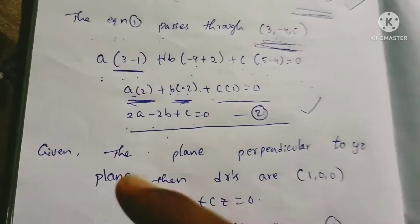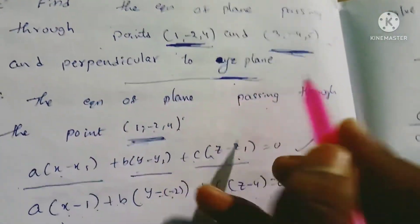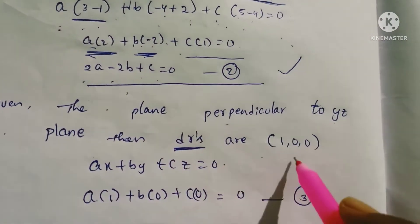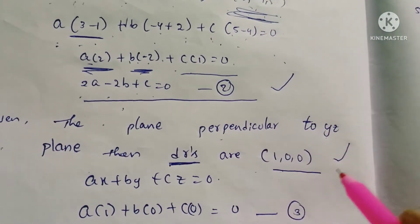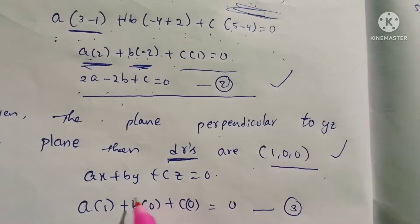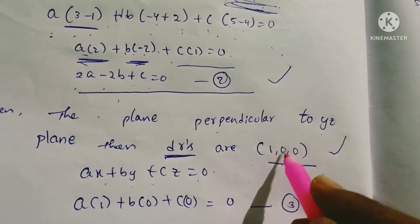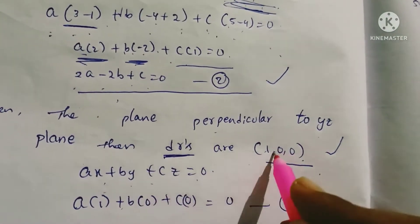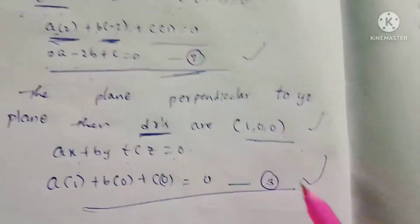Given the plane is perpendicular to the y-z plane, the direction ratios are (1, 0, 0) — as seen in the previous video. So the formula gives: A(x·1) + B(y·0) + C(z·0) = 0. We will now solve this equation to find the values of A, B, and C.